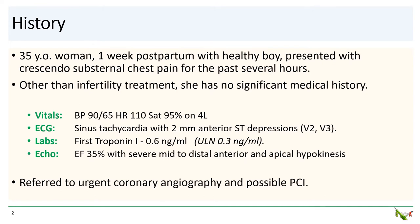STAT echocardiogram showed an EF of 35% with severe mid to distal anterior and apical hypokinesis. A rapid troponin was positive at 0.6 nanograms per mil. The upper limit of normal at this facility is 0.3 nanograms per mil. So she was referred for urgent coronary angiography and possible PCI.